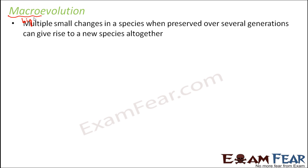Now let us talk about macro evolution. Macro means big, so the evolution here happens on a bigger scale. Multiple small changes in a species, when preserved over several generations, can give rise to a new species altogether. In the sparrow example, even though the North American and South American sparrows look physically different, they can still reproduce amongst themselves because they belong to the same species. But in macro evolution, the changes become so great that the organisms cannot even reproduce with each other — they become two completely different species.